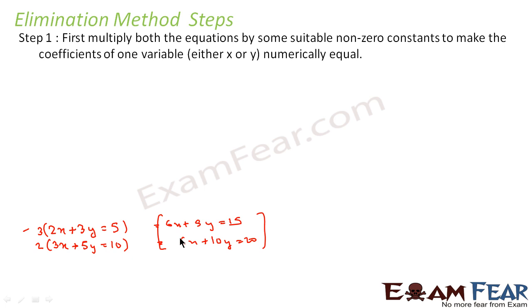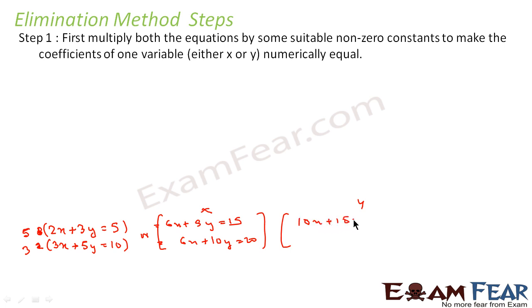We have made the x coefficients the same. Alternatively, if we want to make y equal, we could multiply to get 10x plus 15y equals 25 and 9x plus 15y equals 15. So either approach is possible — we can equalize the x coefficients or the y coefficients.